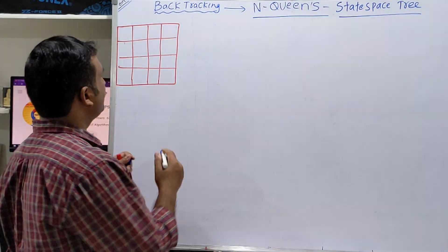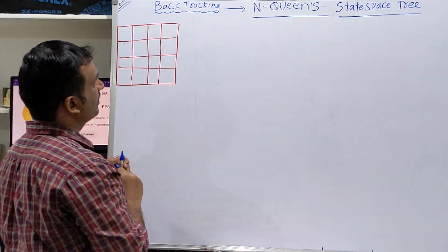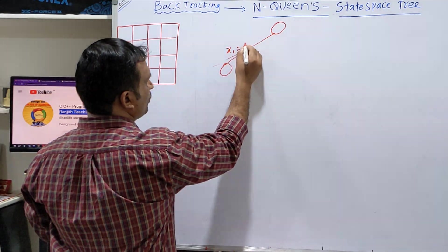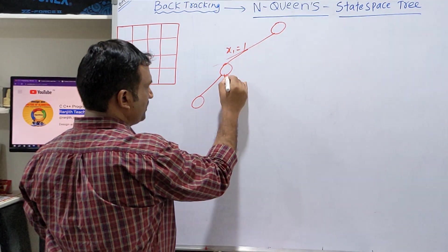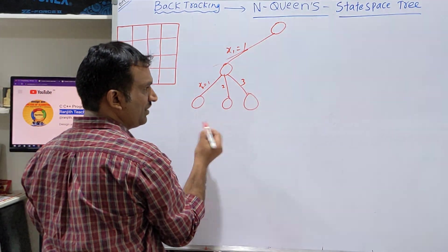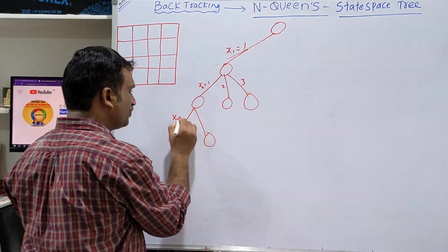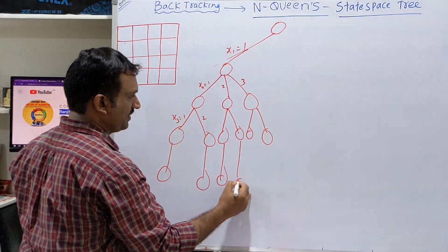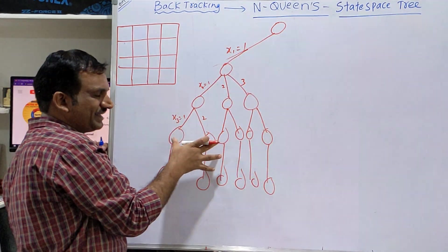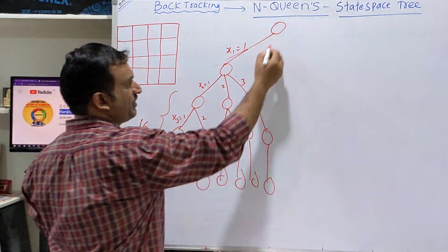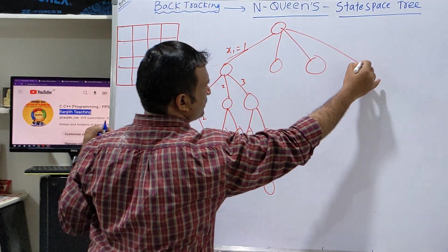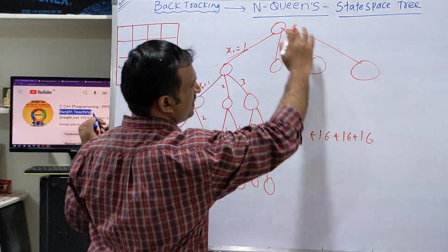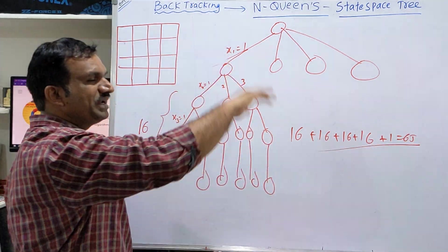In a state space tree, assume that you are placing x1 equal to 1. That means you will have three possibilities: x2 equal to 1, 2, or 3. Here you will have possibilities x3 equal to 1 or 2. Similarly here 2 and here 2. If you take one leaf, we will get 16 nodes. Similarly, we will take x1 equal to 2, x1 equal to 3, x1 equal to 4. All possibilities will be 16 plus 16 plus 16 plus 16, which is 64 plus 1 — 65 nodes will be generated in the complete state space tree.